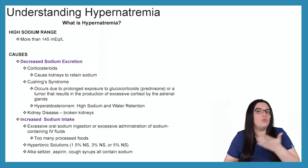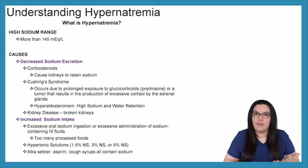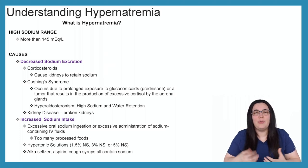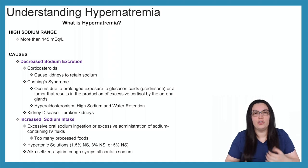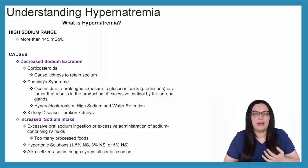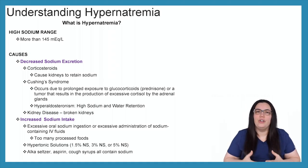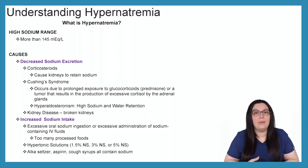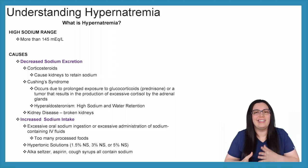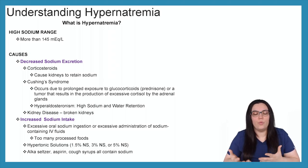Hypernatremia is going to be greater than 145 milliequivalents per liter. We have several causes that lead to hypernatremia, starting with a decrease in sodium excretion. If we have a patient on corticosteroids, that can cause the kidneys to retain sodium, which is why we have to monitor our patients on corticosteroids so this side effect doesn't occur.